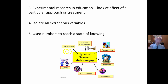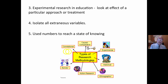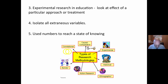In order to make accurate predictions, you have to control all the extraneous variables. Everything is the same except that one thing that you want to test or look for, so that you can say that this indeed causes that. To do this, we have to isolate all extraneous variables. We use numbers to reach a state of knowing here. Something has to be weighed, measured, quantified, in order to say it is so.